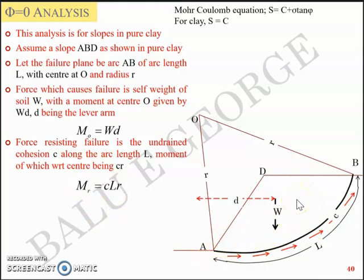So you fundamentally have a mechanism wherein W into D is a clockwise moment trying to fail the slope ADB, and you have an anti-clockwise moment M_R equal to CLR trying to resist the failure. So for the slope to be safe, M_R should be fairly greater than M_O, or the resisting moment should be fairly above M_O. And we define the factor of safety of a slope as the ratio of M_R to M_O. Higher the value of M_R, higher will be the factor of safety. So when you have a higher resisting moment, you will have a higher factor of safety, and the slope would turn out to be a safe one. So you have CLR by WD as a factor of safety.